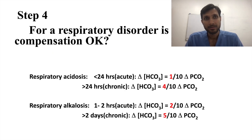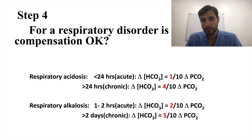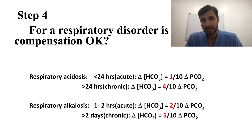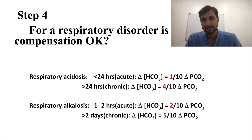Step 4 is compensation. For a respiratory disorder, is renal compensation adequate? For respiratory acidosis there is acute and chronic compensation — acute is within 24 hours, chronic is beyond 24 hours. For acute compensation: ΔHCO3 = 1/10 × ΔPCO2. For chronic compensation: ΔHCO3 = 4 × ΔPCO2/10. For respiratory alkalosis, the factor is 2 for acute and 5 for chronic compensation.